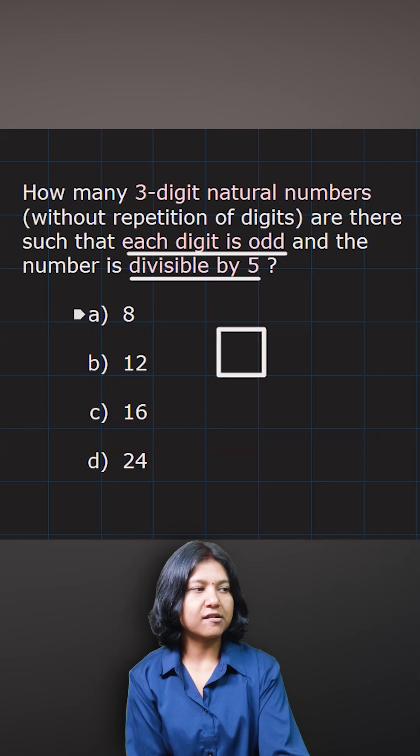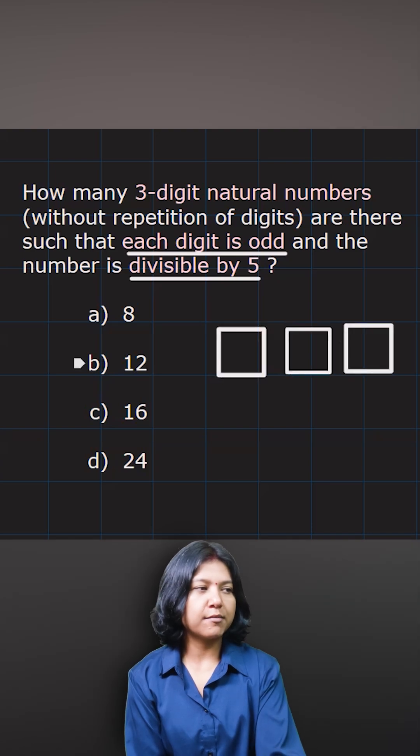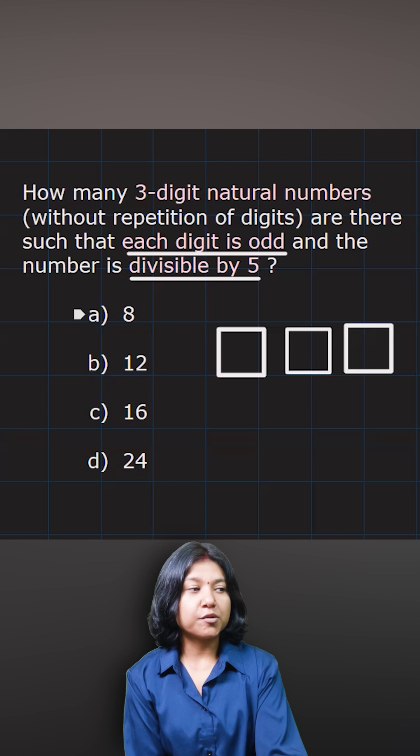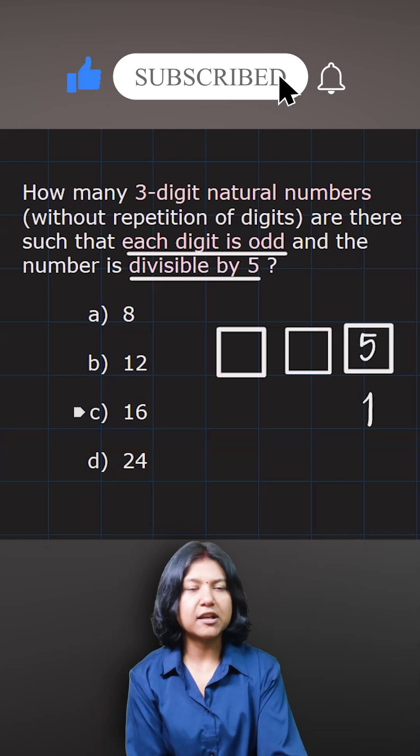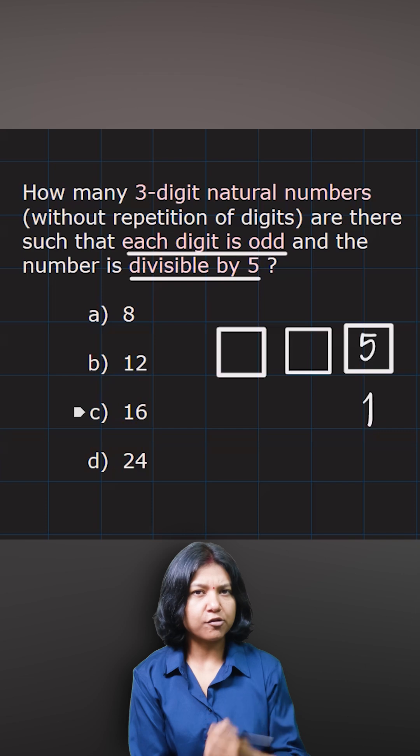So there will be three places for the digits. Now because you want the number to be divisible by five, your number must end with five always. So you have only one option to fill up the last place. Zero is not in our option.